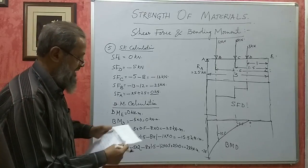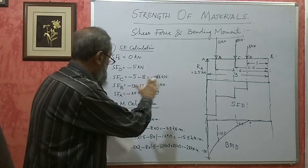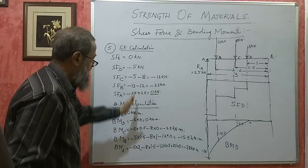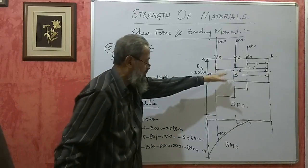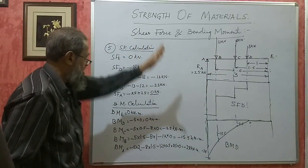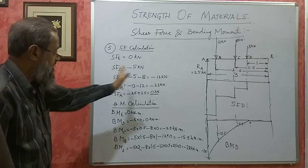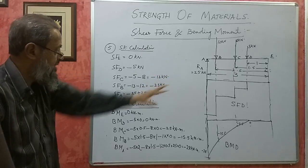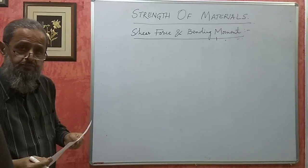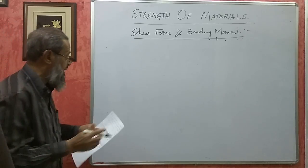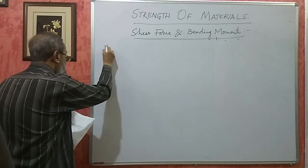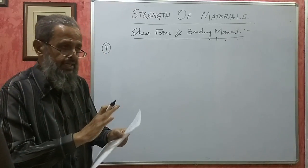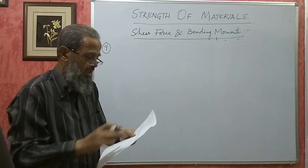In your answer book, take a full page. Write the question number, do the calculations on one part of the page and draw the figures on the other part. Next, I have selected question number 9 on cantilever — a problem with only UDL, uniformly distributed load.